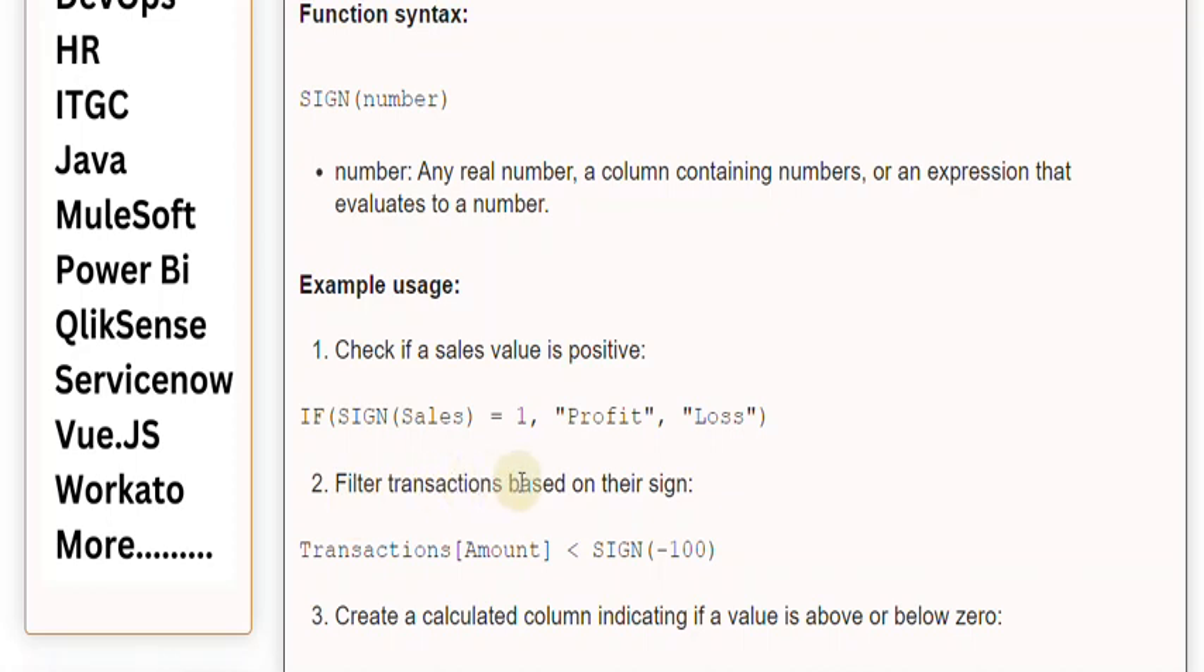2. Filter transactions based on their sign: Transactions[Amount] < SIGN(-100).